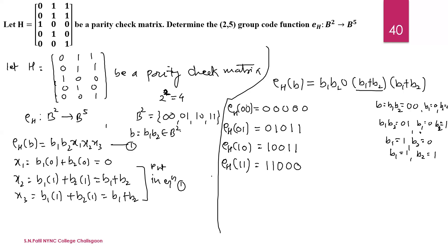So the required group code function becomes the (2,5) group code, encoded by the parity check matrix.